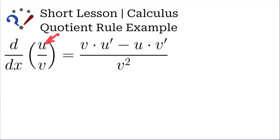If you call this the high and the low, and some people memorize it this way, low d high minus high d low divided by low squared. I always got confused which came first. Is it low d high or high d low?